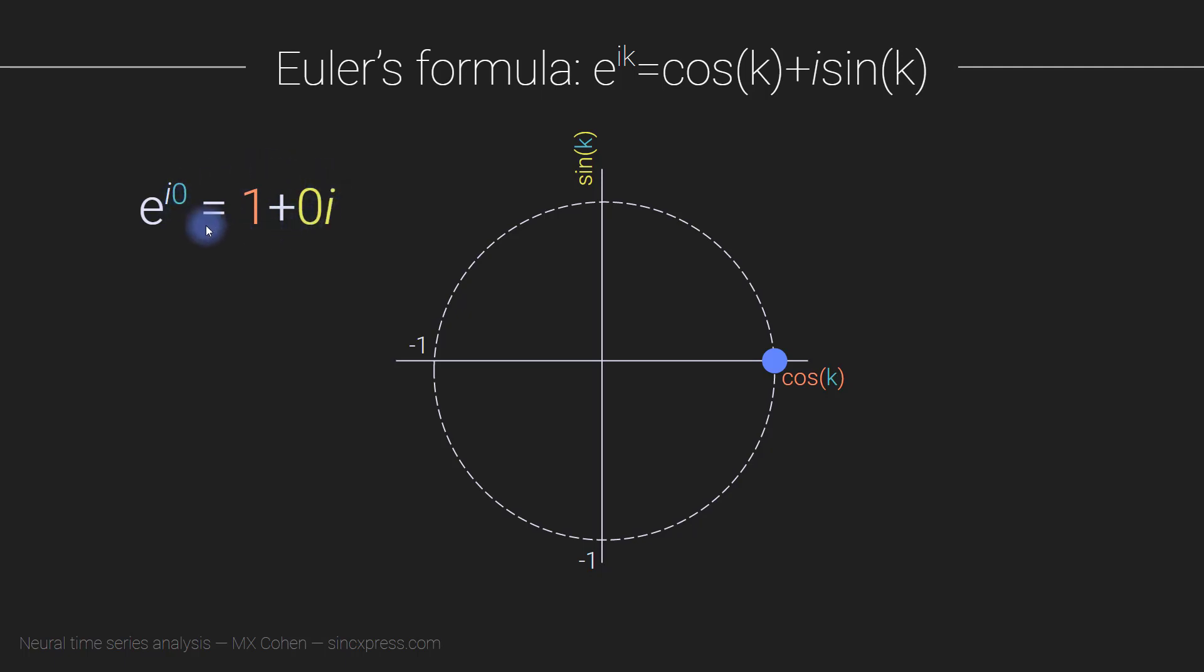And we can also intuit this algebraically, we can also think about this algebraically. And that's because any number to the power of zero is going to be equal to one. So yeah, so this is just sort of also obvious from an algebraic perspective.